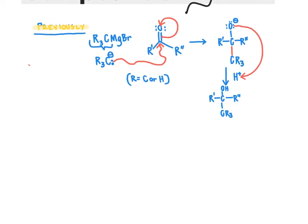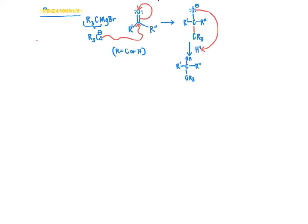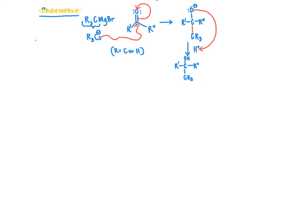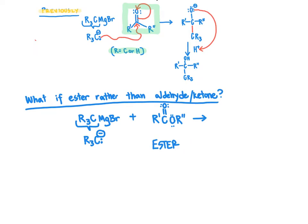The reason I wrote this out is to contrast it with the mechanism that will take place if, instead of starting with an aldehyde or a ketone — where we defined our R groups as carbons or hydrogens — we instead start with an ester molecule. We're going to use the same Grignard reagent, but now rather than mixing it with a ketone or aldehyde, we're mixing it with an ester, which is a carbonyl-containing functional group with a carbonyl group directly next to an O-alkyl group.